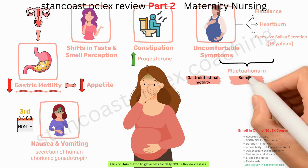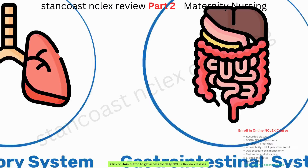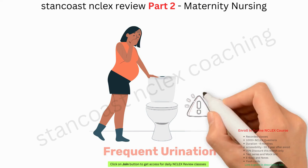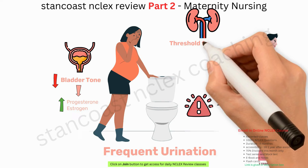Increased venous pressure may result in the development of hemorrhoids, and gum tissue may swell and bleed. The renal system is not immune to these shifts. Frequent urination becomes noticeable in both the first and third trimesters, often accompanied by reduced bladder tone due to heightened progesterone and estrogen levels. Furthermore, the renal threshold for glucose may decrease during pregnancy.